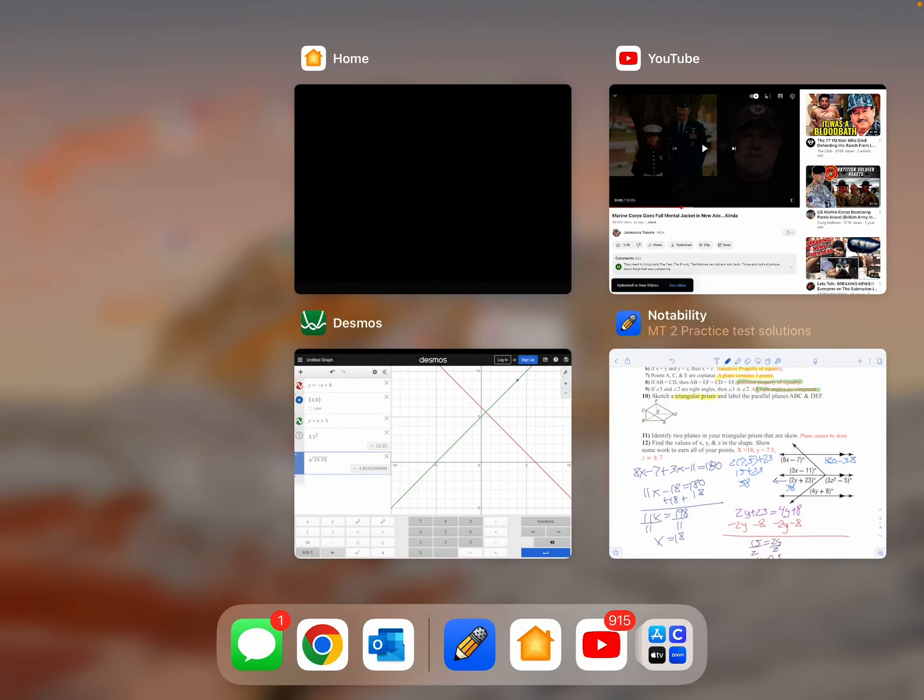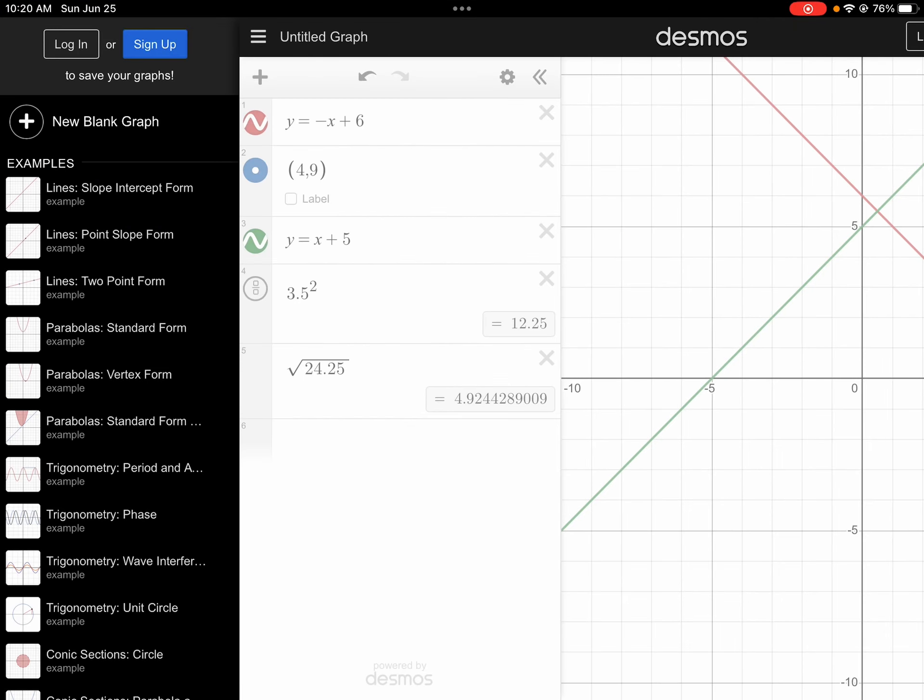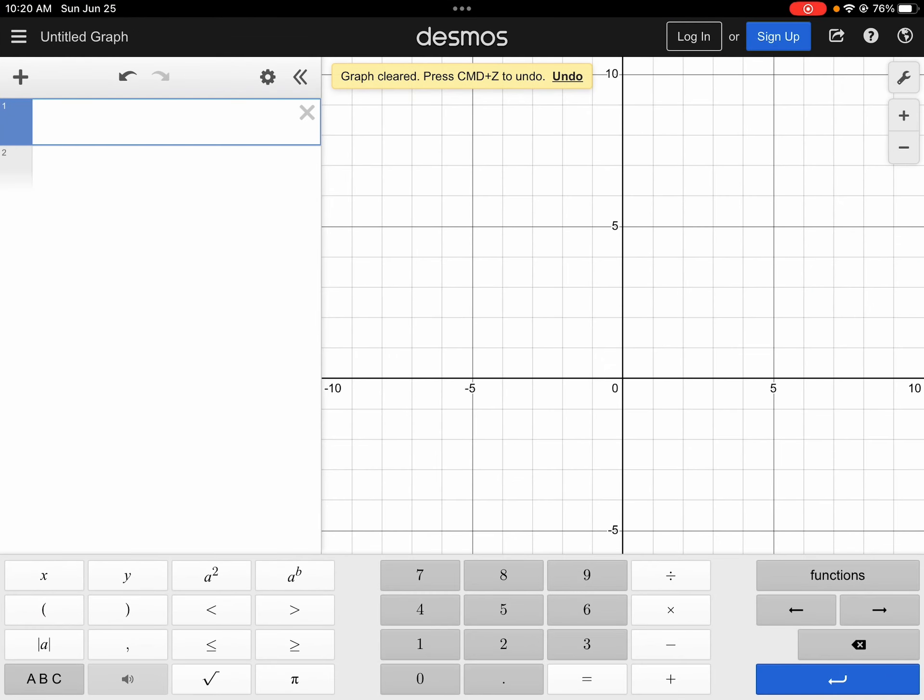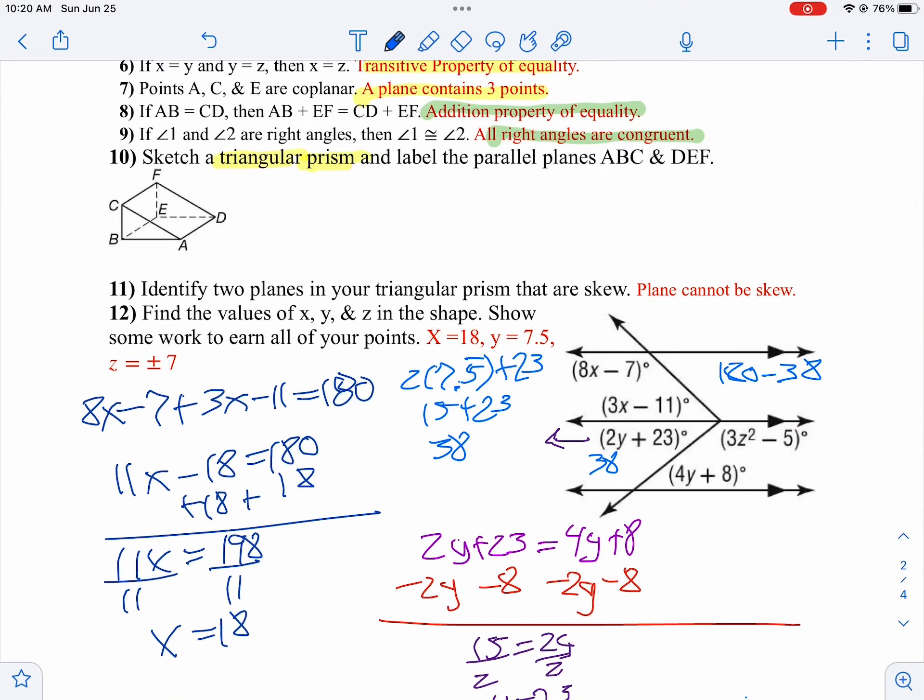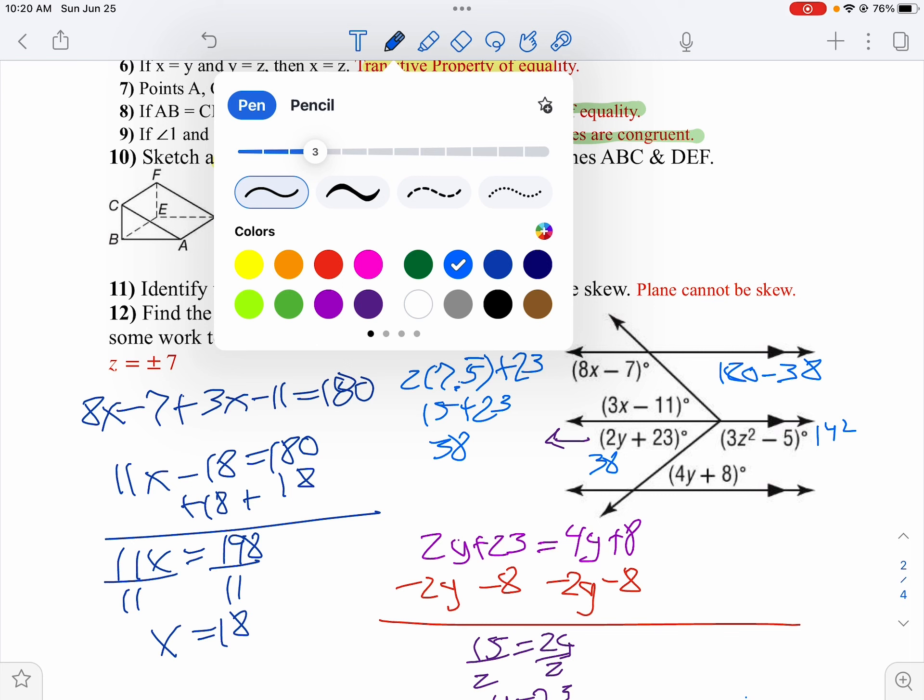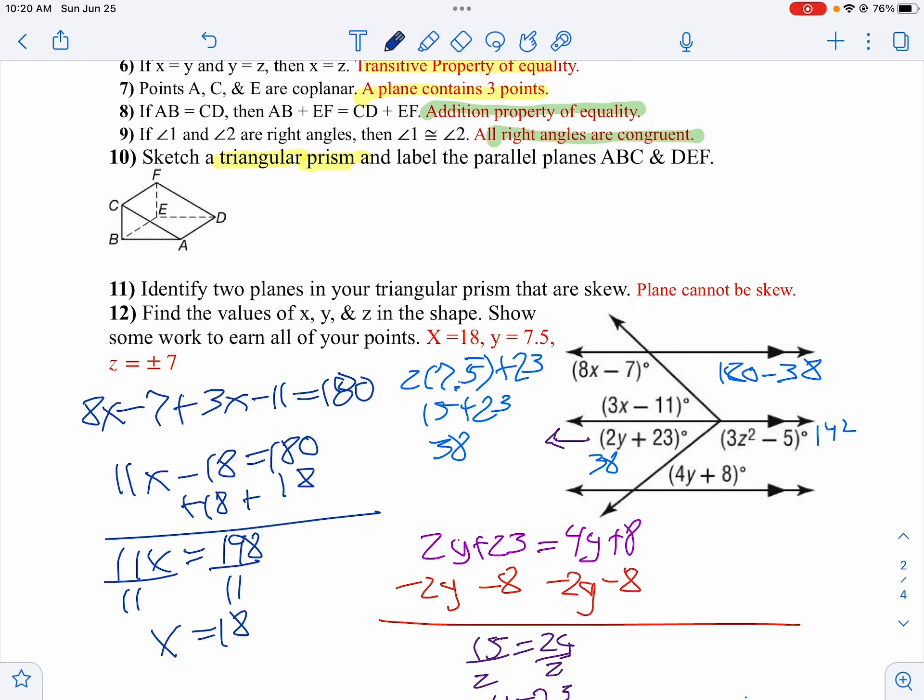So if I take 180 minus 38, I get 142. So this angle with z is 142. So now I can make an equation and say 3z squared minus 5 is 142.